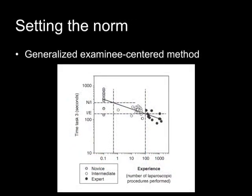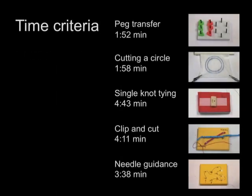The norm is based on a generalized examinee-centered method. This educational approach uses the linear relationship between assessment scores and degree of procedural experience of multiple reference groups. For every task, a pass-fail cut-off score was defined on the interception of novices and intermediates' performance.